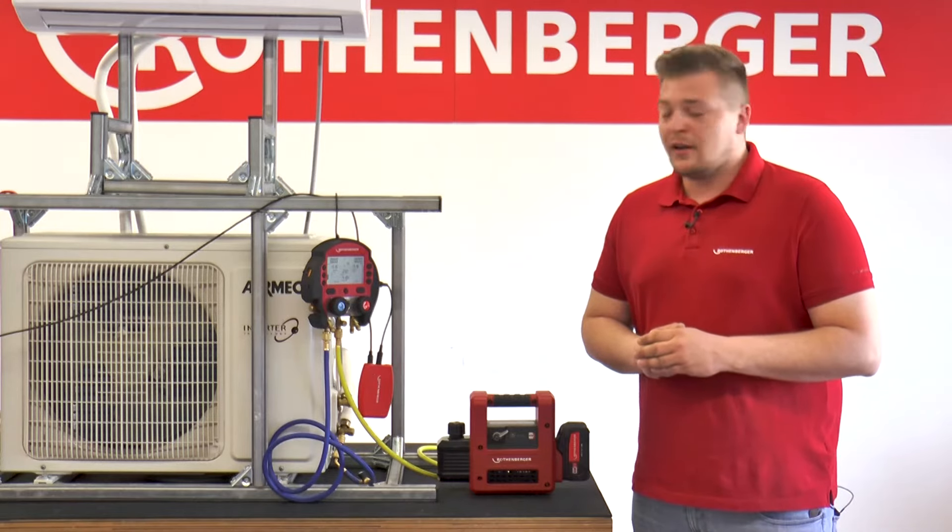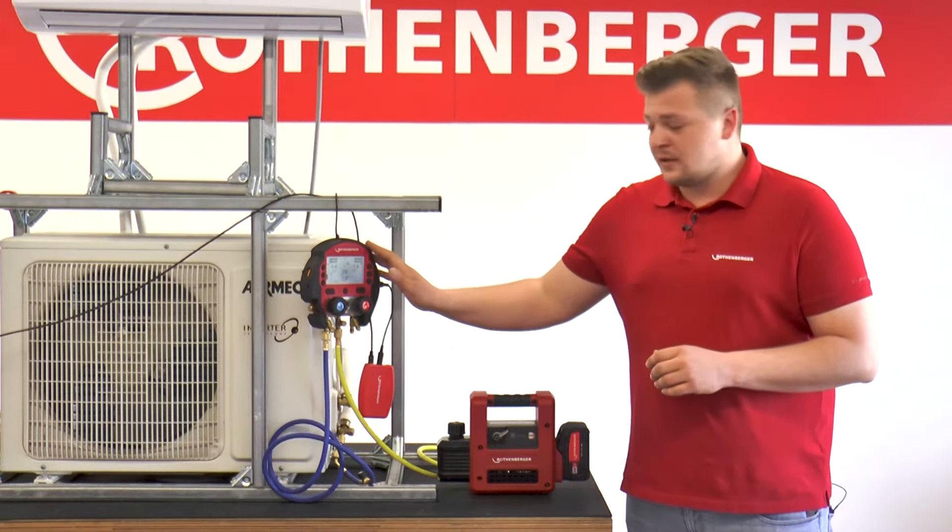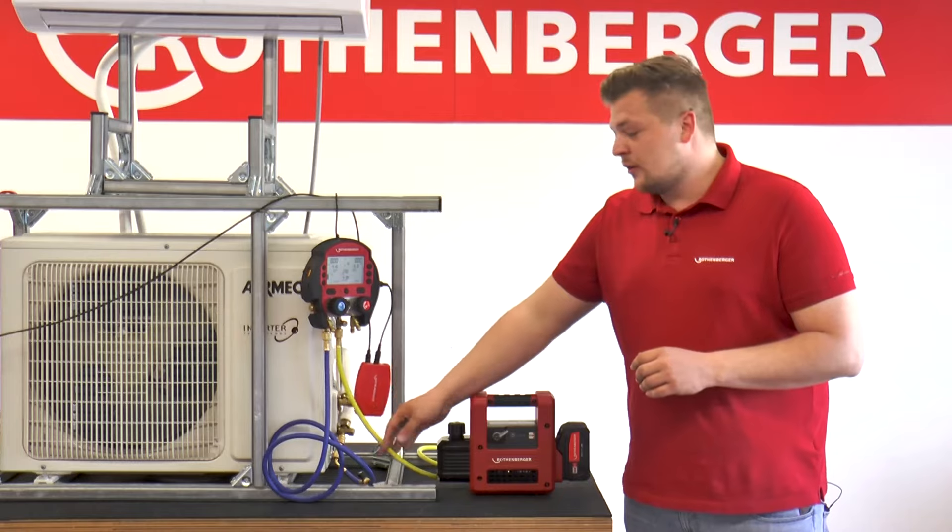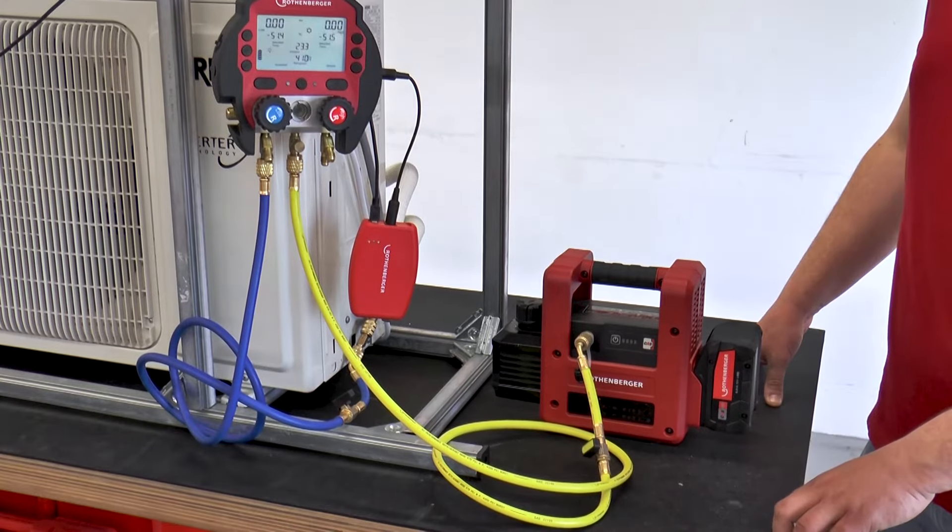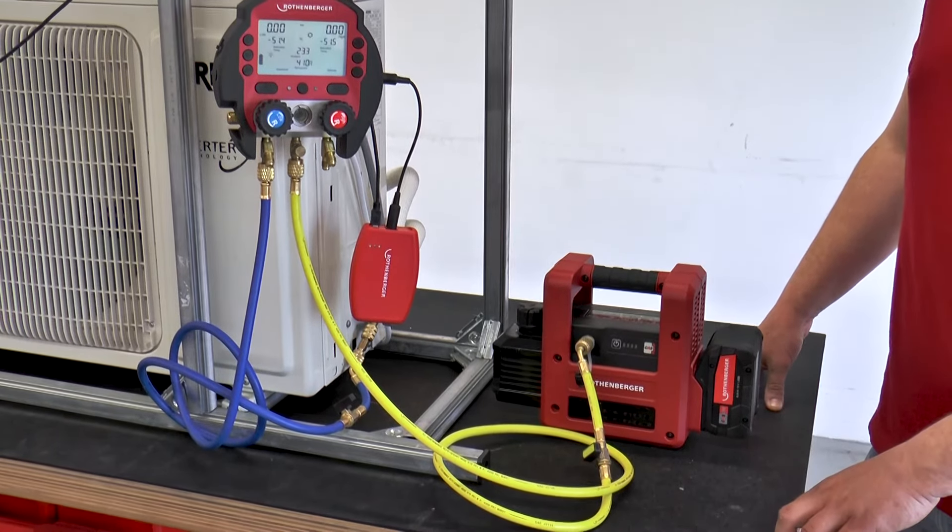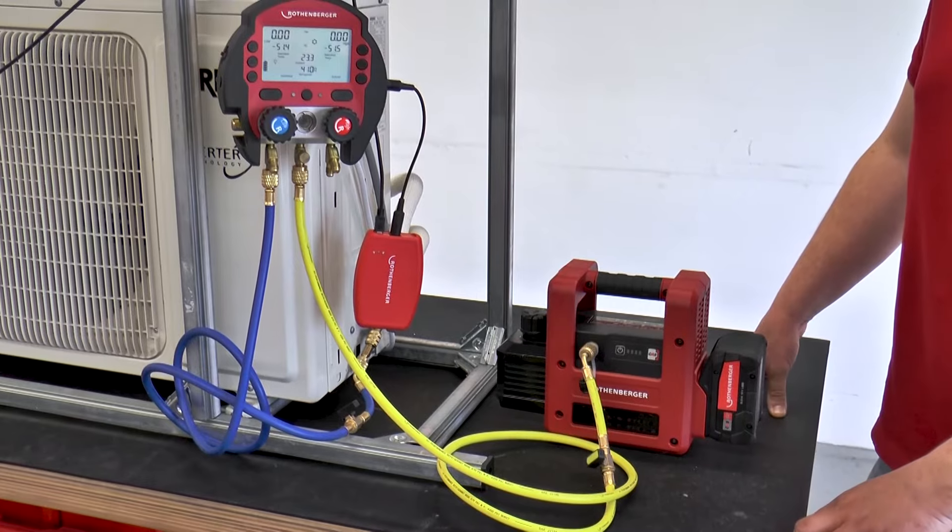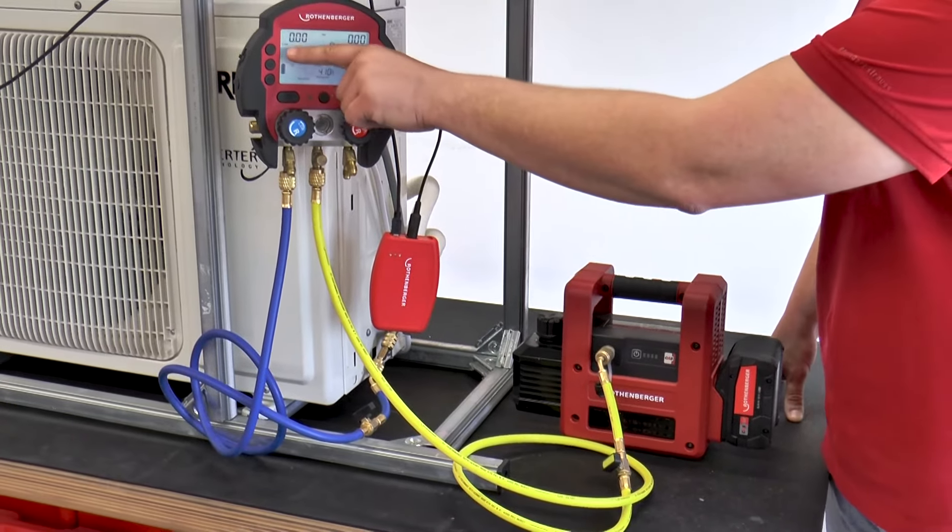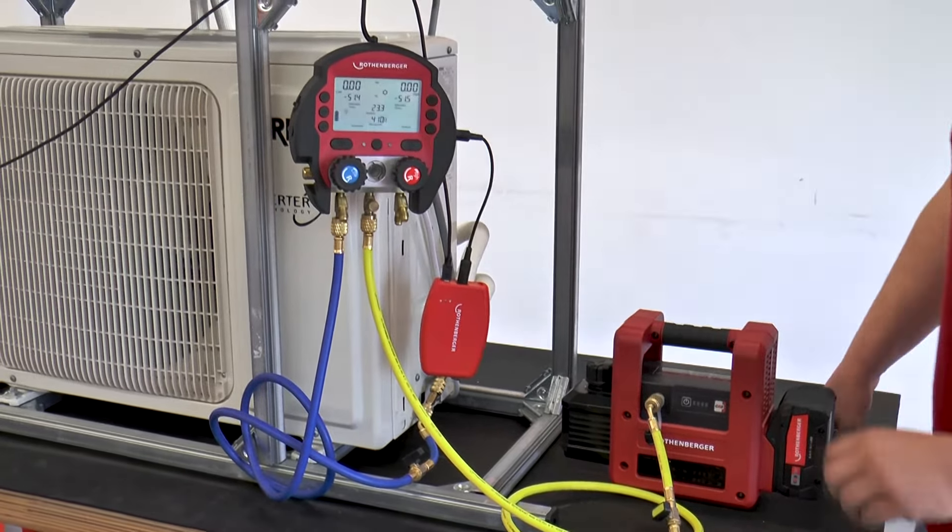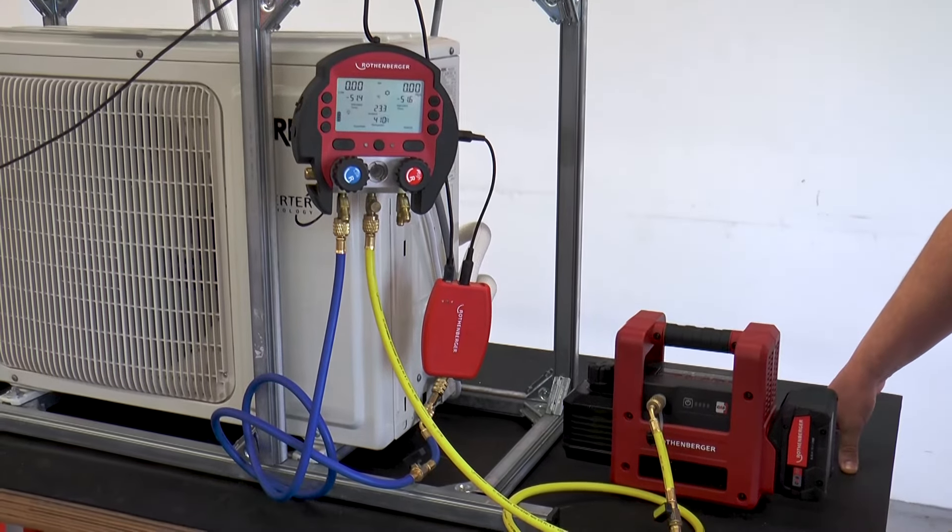In addition to the Rho AirVac, you also need the Rho Cool 600 and the appropriate refrigerant hoses to evacuate. After the leak test has been successfully completed after 60 minutes and the nitrogen has been removed from the system, the next step in the commissioning process is evacuation or vacuum extraction.